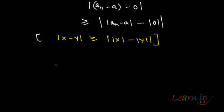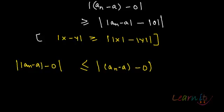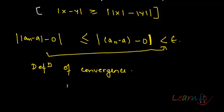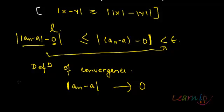This means that ||a_n - a| - 0| is less than |a_n - a - 0|, which is less than epsilon. So this will be less than epsilon. Now by the definition of convergence, we know that |a_n - a| tends towards 0. This is the sequence that tends towards 0, and this is something we will be using throughout while proving the algebraic properties of sequences.